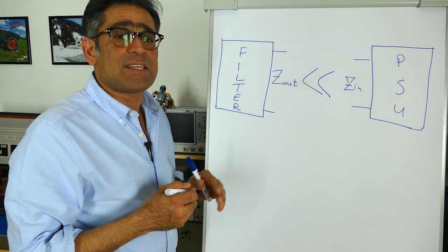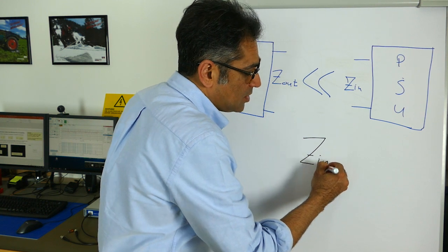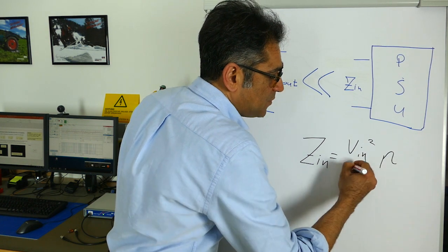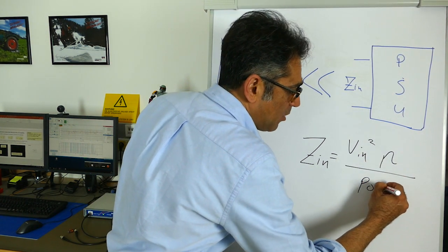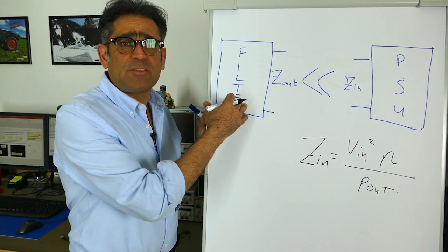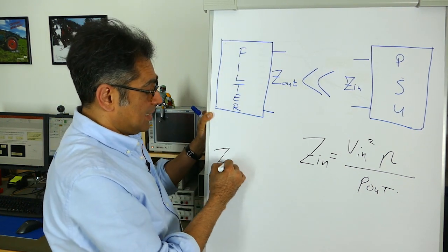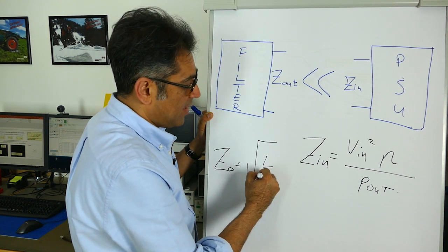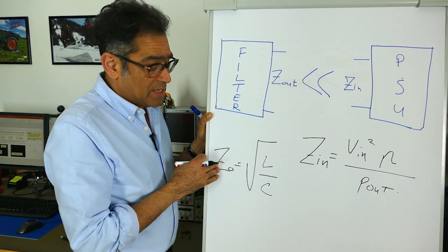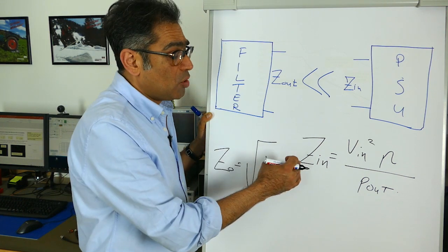Luckily we can estimate these quite easily. The equation for the input impedance of the power supply is V_in squared times efficiency divided by output power, as shown in Steve Sandler's book, and the Z_out of the filter, which is a simple LC filter, Z_out is equal to the square root of L over C. You can see right now that the larger the L, the bigger the Z_out, and what we're trying to avoid is that this value ever gets close to that.